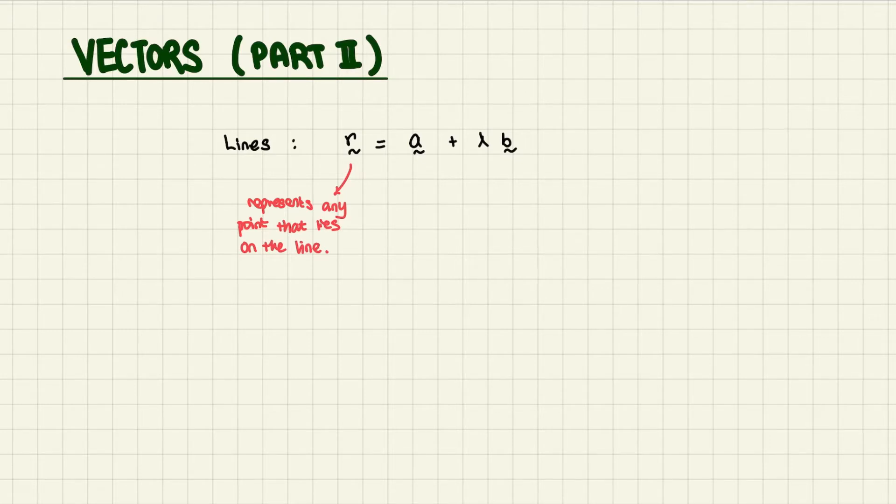What is a? a is usually a given point on the line. So this usually would be given. If it's not given, it's for you to find. Usually, they should give you enough values for you to be able to find this.